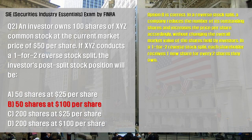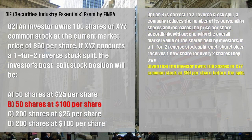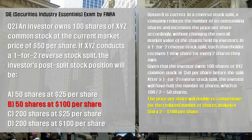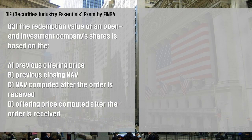Option B is correct. In a reverse stock split, a company reduces the number of its outstanding shares and increases the price per share accordingly without changing the overall market value of the shares held by investors. In a 1-for-2 reverse stock split, each shareholder receives 1 new share for every 2 shares they own. Given that the investor owns 100 shares at $50 per share before the split, after the split the investor will have 100 ÷ 2 = 50 shares, and the price per share will double to $50 × 2 = $100 per share. Thus, the investor's post-split position will be 50 shares at $100 per share.